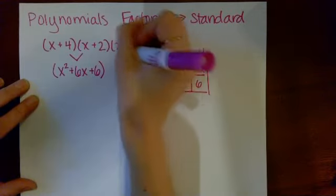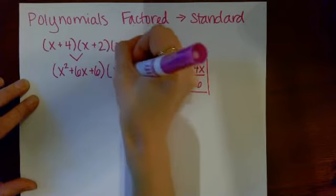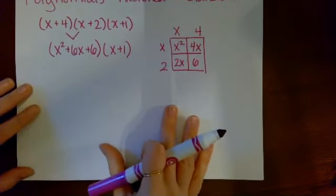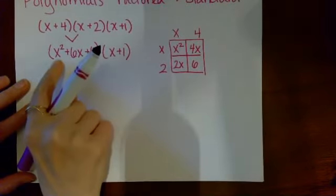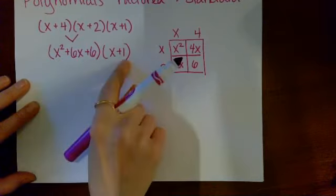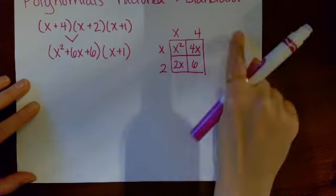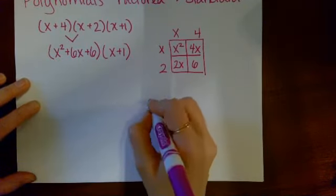I'll be multiplying this product by this factor x plus one. For that, I'm going to make another area model. This area model will be three by two. It could also be two by three. It doesn't matter which way you do the rectangle. It'll work out either way.